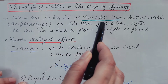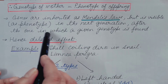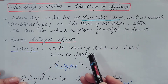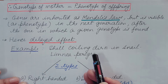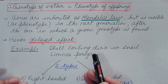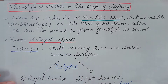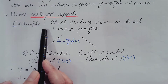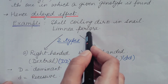Genes are inherited according to Mendel's laws, but the phenotype is visible in the next generation — the generation after the one in which the genotype is found. For example, if the genotype for a certain trait is present in the F2 generation, the phenotype is not visible in F2 but is seen in the F3 generation. This is known as the delayed effect.